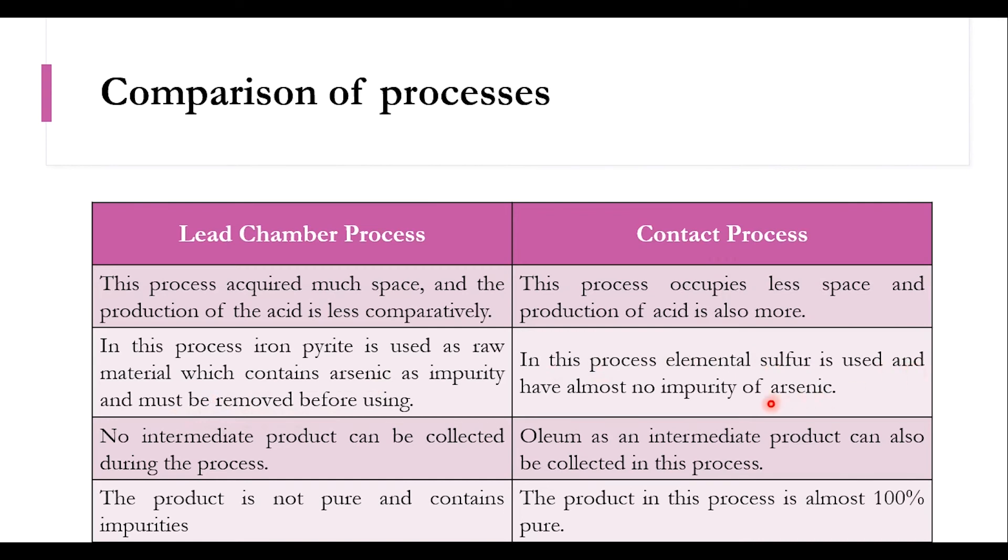Third, no intermediate product can be collected from the lead chamber process, while oleum was produced and collected as a byproduct or intermediate product in the contact process. The product is not pure in lead chamber and contains impurities - 78% means other quantities are also present, while the contact process is almost 100% pure.